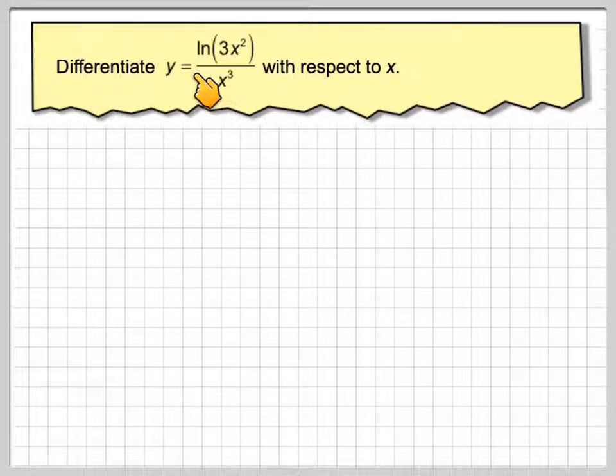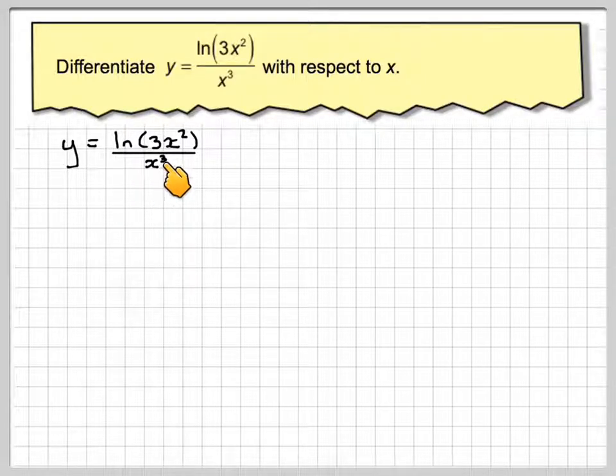Differentiate y = ln(3x²)/x³ with respect to x. So y equals ln of 3x squared over x cubed.